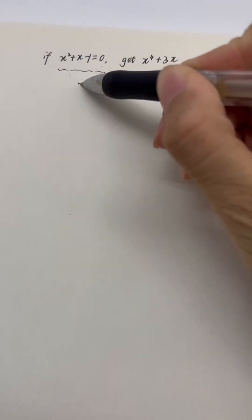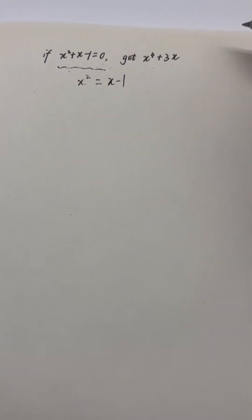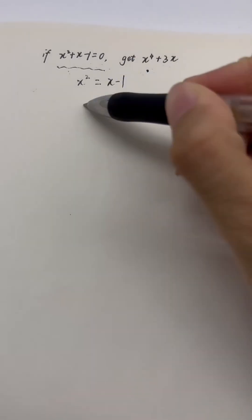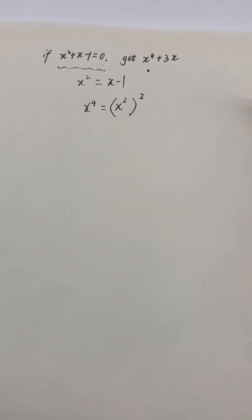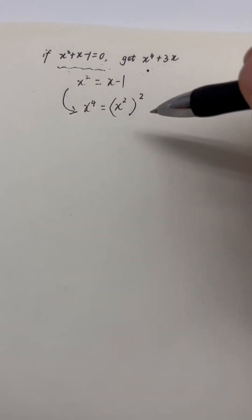We can learn from this: x squared equal x subtract 1, and here x to the power 4 equals x squared squared. Then we can use this to substitute it.